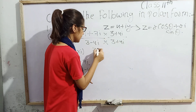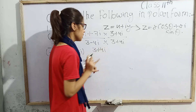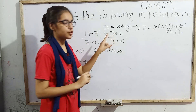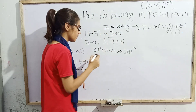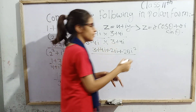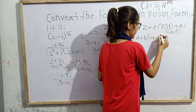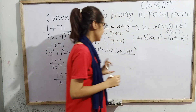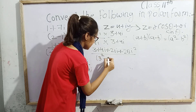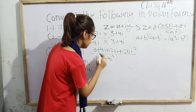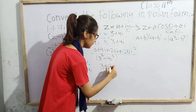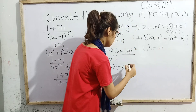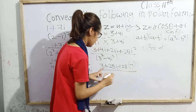Expanding the numerator: 1×3 = 3, plus 1×4i = 4i, plus 7i×3 = 21i, plus 7i×4i = 28i². The denominator is in the form (a + b)(a - b) = a² - b², so it becomes 3² - (4i)² = 9 - 16i². Since i² = -1, this gives 9 - 16(-1) = 9 + 16 = 25.